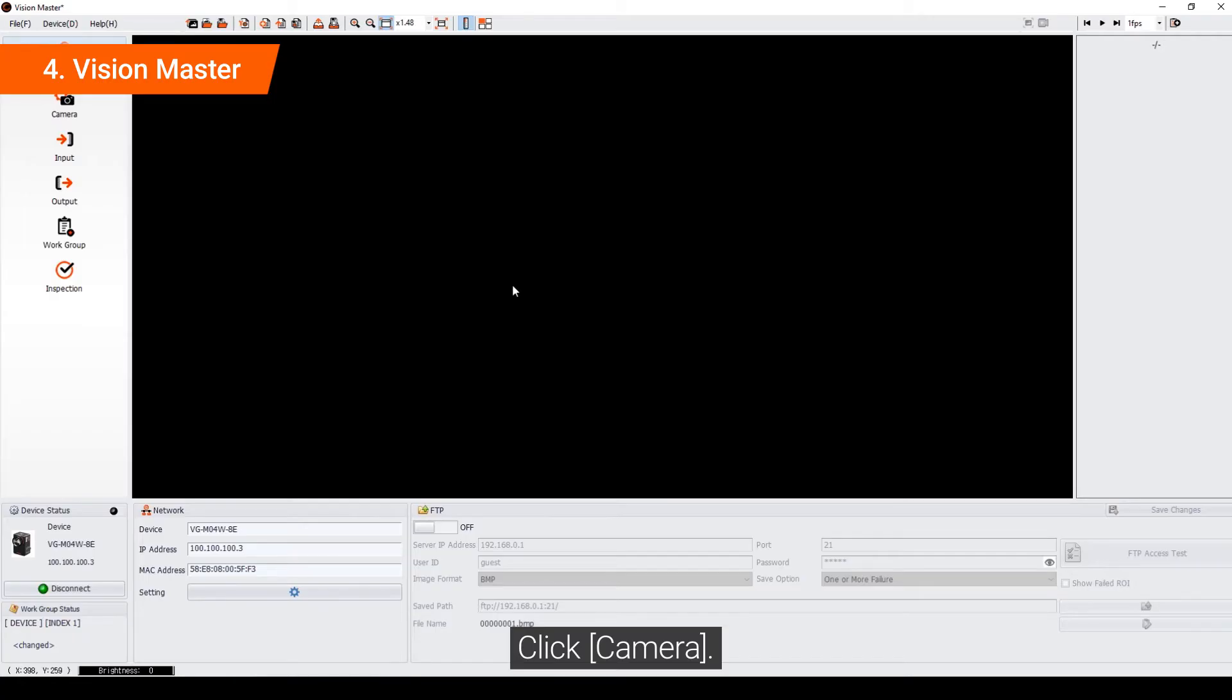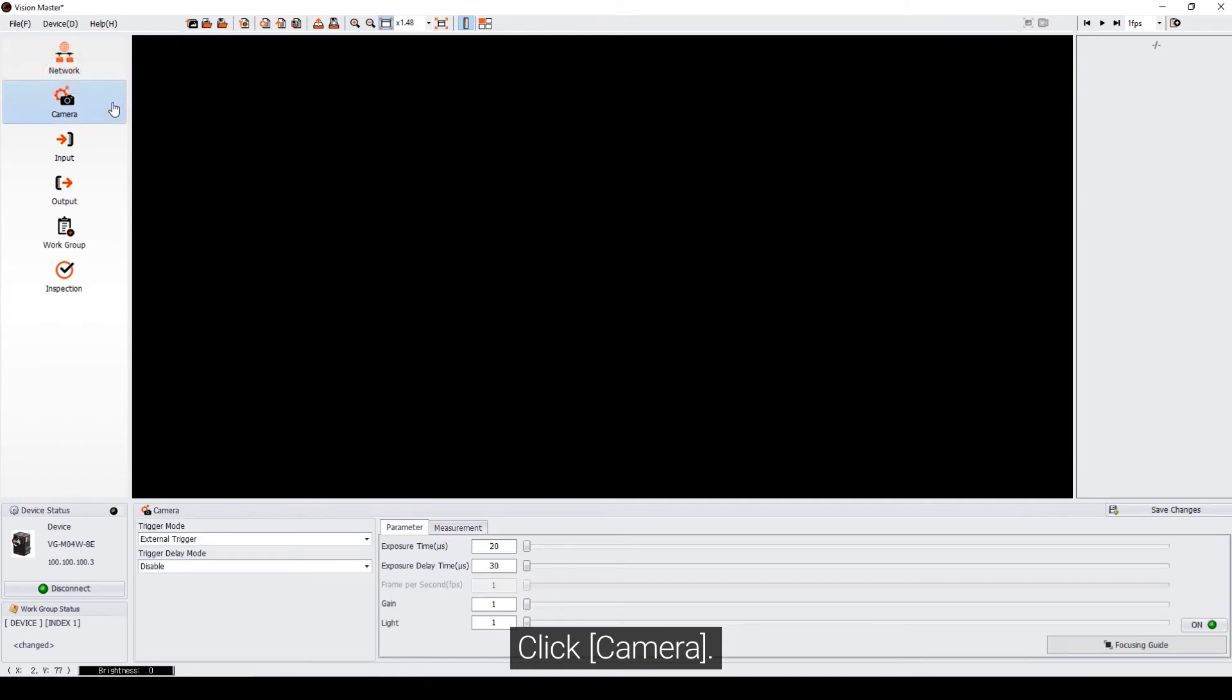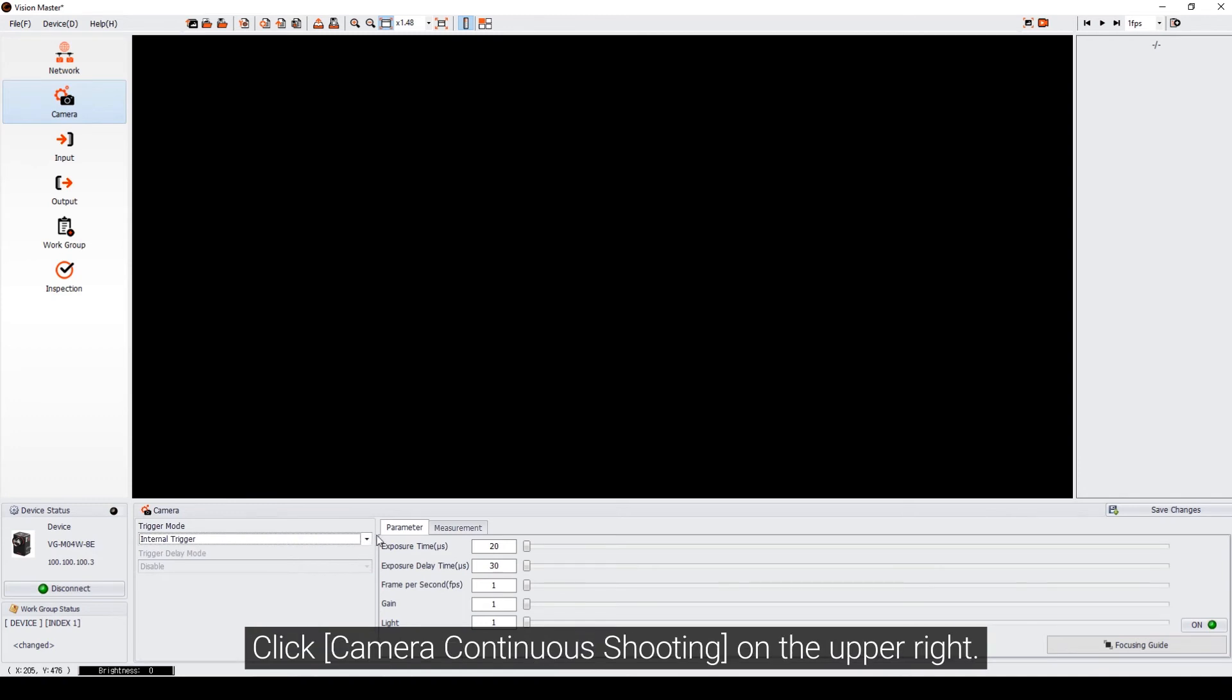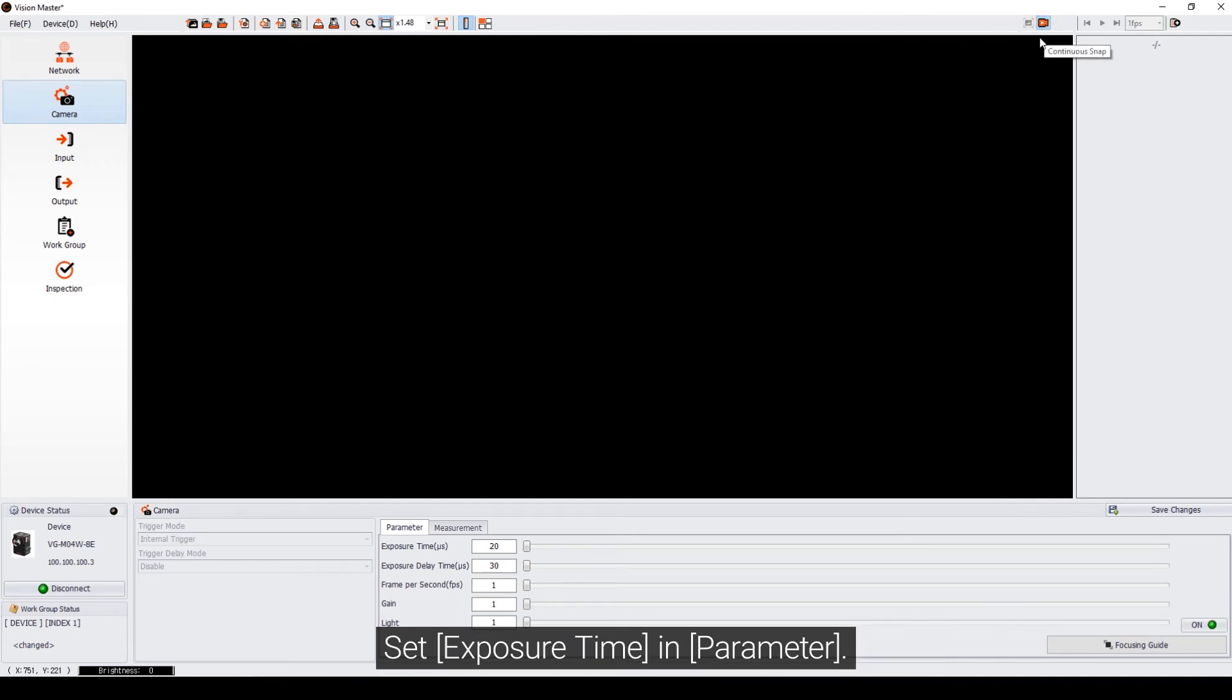Click Camera. Check the trigger mode to Internal trigger. Click Camera continuous shooting on the upper right. Set Exposure time in Parameter.